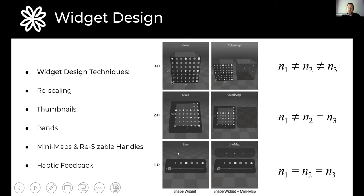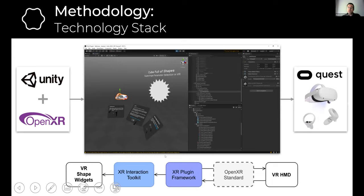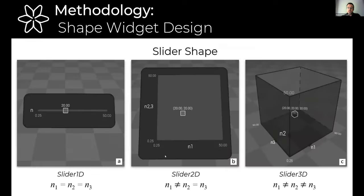Our designs consider techniques found in slider design and InfoVis studies. Even though most of these techniques were not designed specifically for VR, they are easily extendable to spatial user interfaces. Our VR shape widgets were developed in Unity, encoded with the XR Interaction Toolkit and C# scripting, and the VR app runs on Oculus Quest. We considered three major types of shapes — line, quad, and cube shape widgets — for probing 1D, 2D, and 3D exponent parameter spaces.